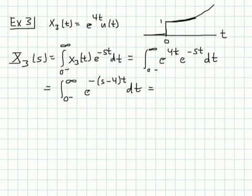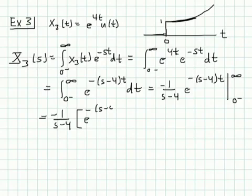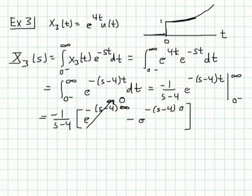We compute this integral: it equals minus 1 over (s-4) times e^{-(s-4)t}, evaluated between 0 and infinity. That gives minus 1 over (s-4) times [e^{-(s-4)·∞} minus e^{-(s-4)·0}]. We choose values of s for which the first term goes to 0. Since e^{-(s-4)·0} equals 1, we're left with minus 1 over (s-4) times minus 1, giving us 1 over (s-4).